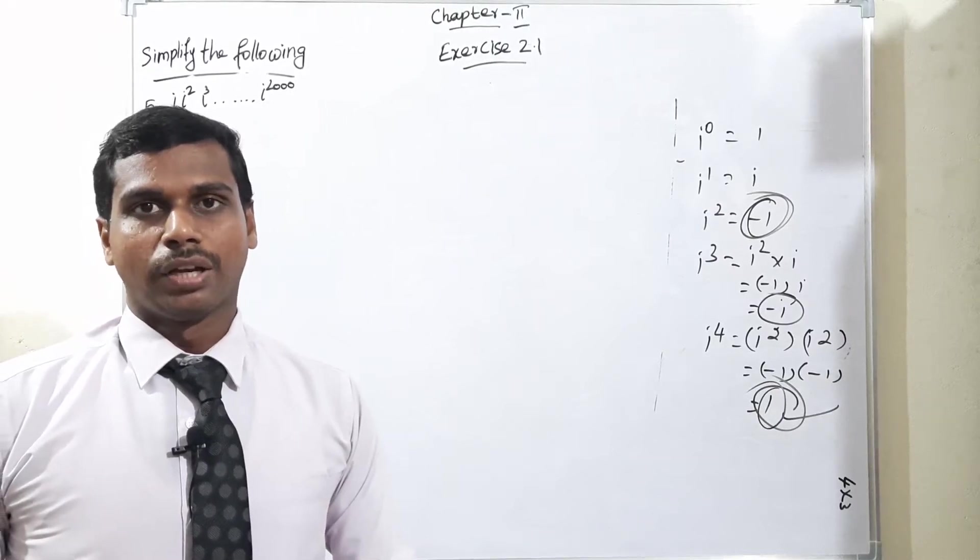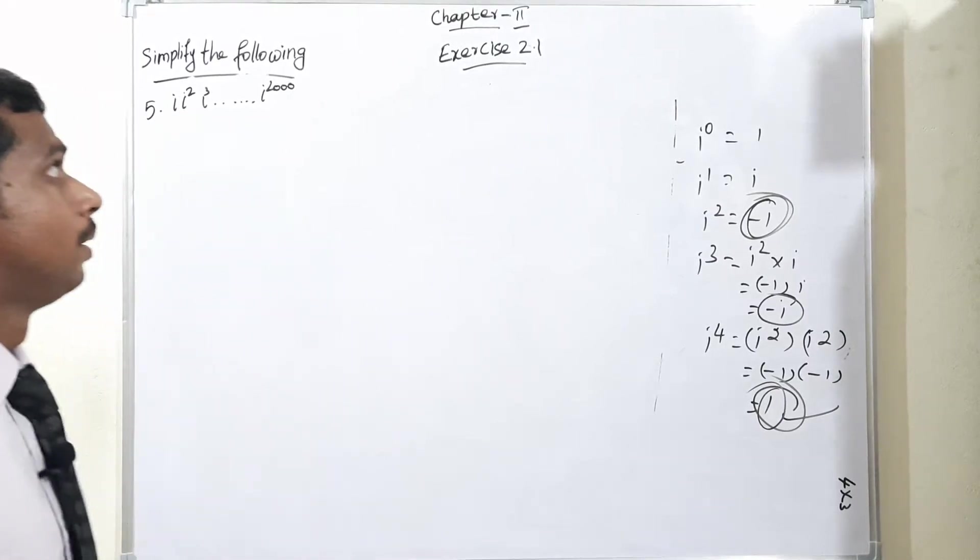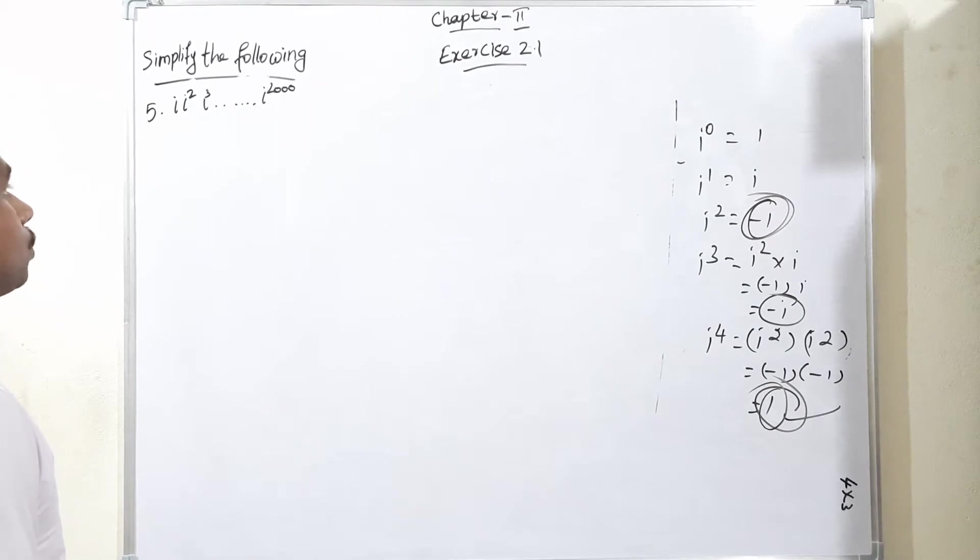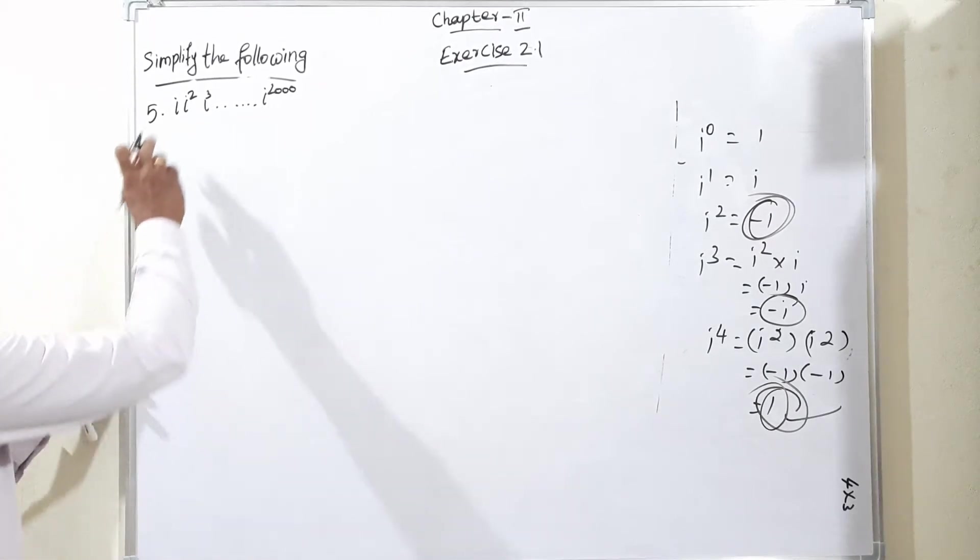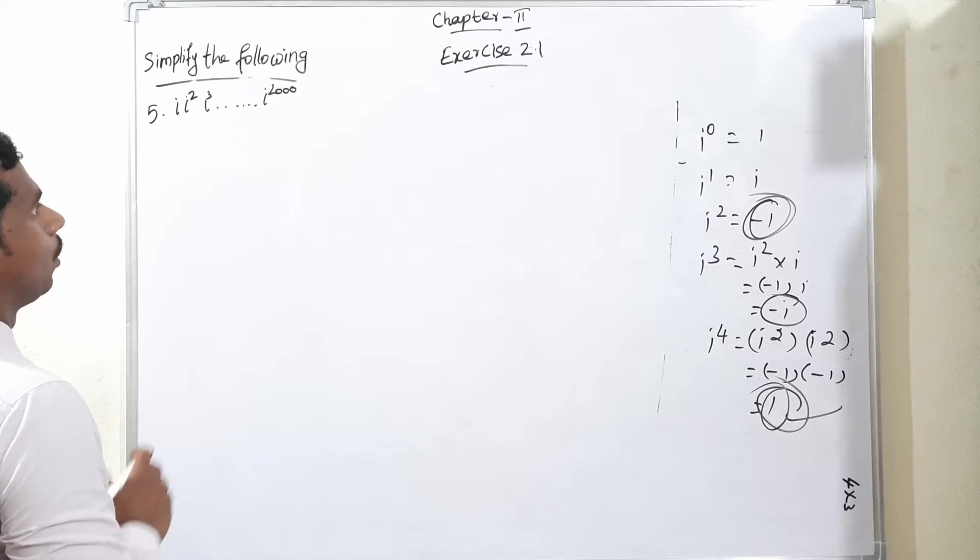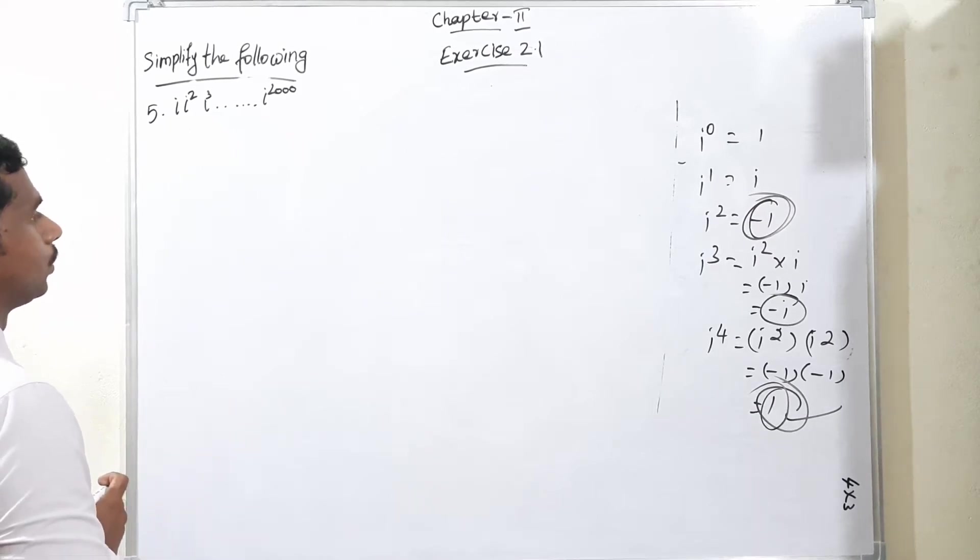Good evening to everyone, welcome to Tenimax. Now I am moving to exercise 2.1 question number 5. Actually i times i squared times i cubed dot dot dot is equal to i to the power 2000.